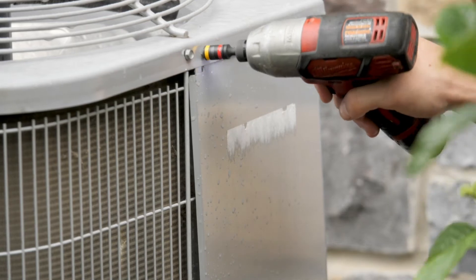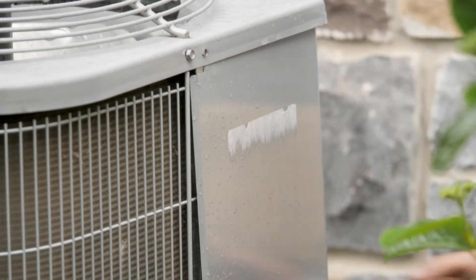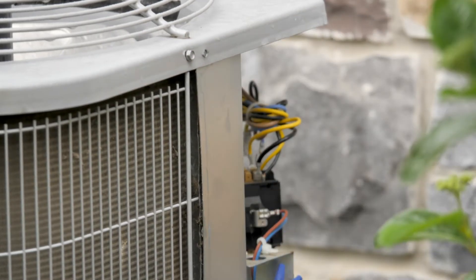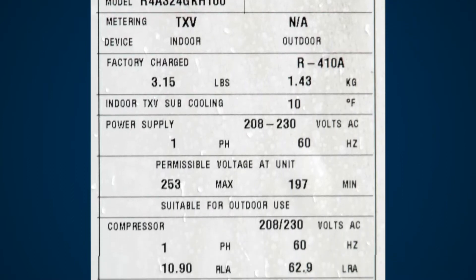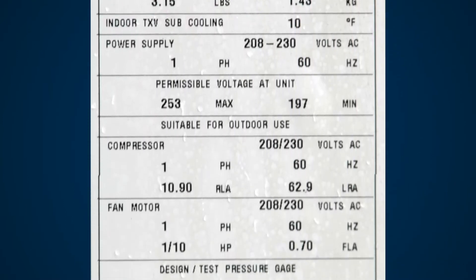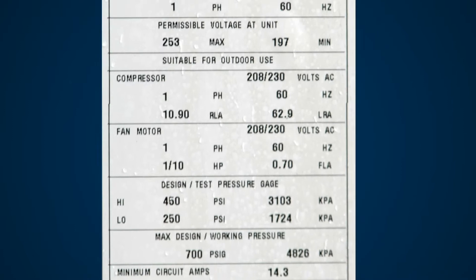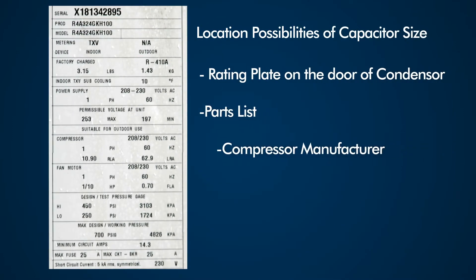Now that we have line voltage disconnected, let's determine what size capacitor this unit should have. This is going to be listed sometimes on the rating plate on the door of the condensing unit. Sometimes you have to look for it in the parts list or from the compressor manufacturer.